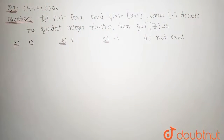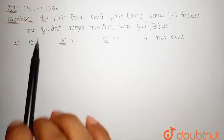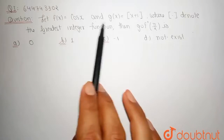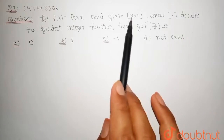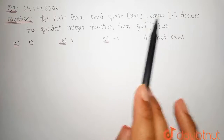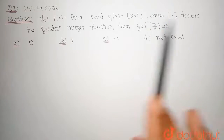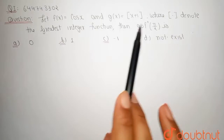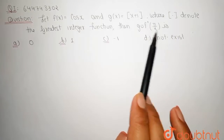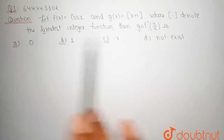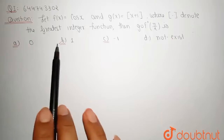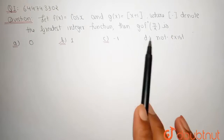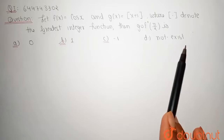Hello friends, welcome to Doubtnut. Our question is: let f(x) = cos(x) and g(x) = greatest integer of x plus 1, where the square bracket denotes the greatest integer function. Then gof'(π/2) is — option A: 0, option B: 1, option C: -1, and option D: none of these.